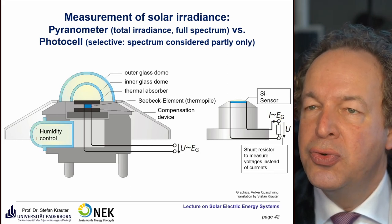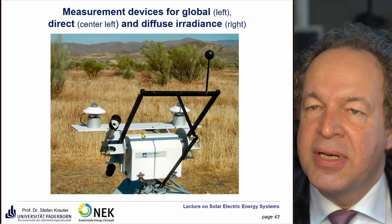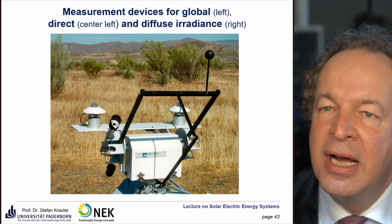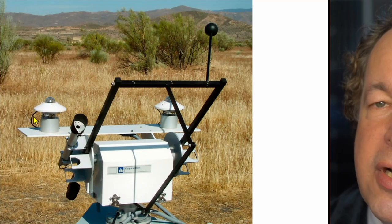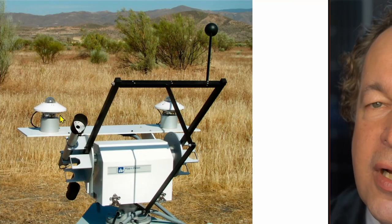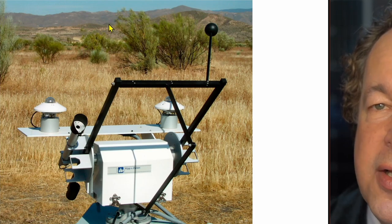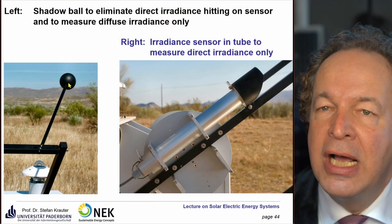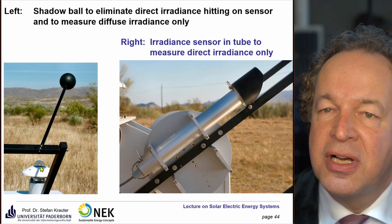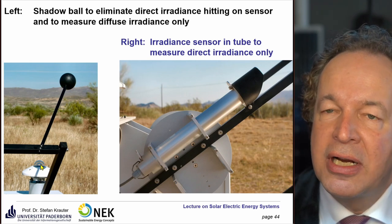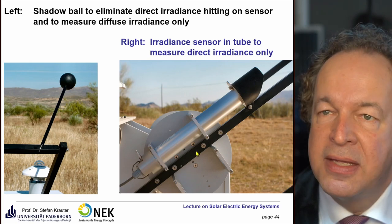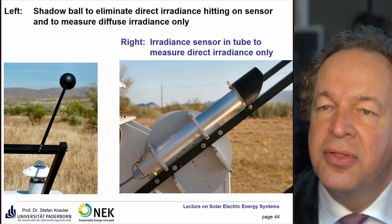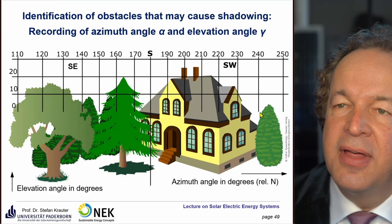For measuring global irradiance, irradiance can come from all directions — either direct from the sun, diffuse from the sky, or albedo. A shadow ball must always be repositioned to cast a shadow directly on the pyranometer. The counterpart is for direct irradiance measurement.